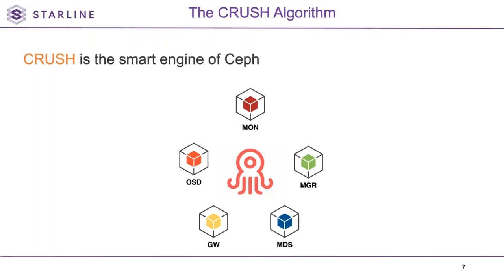The cement which bonds all those components together is CRUSH — the algorithm that smartly manages data flow.